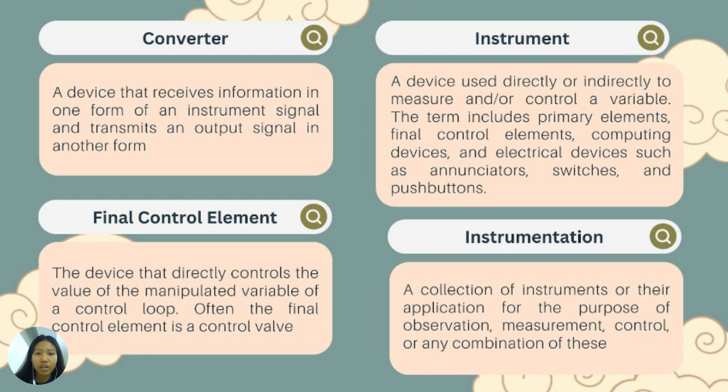Instrument. A device used directly or indirectly to measure and or control a variable. The term includes primary elements, final control elements, computing devices, and electrical devices such as annunciators, switches, and push buttons. And instrumentation. It is a collection of instruments or their application for the purpose of observation, measurement, control, or any combination of this.